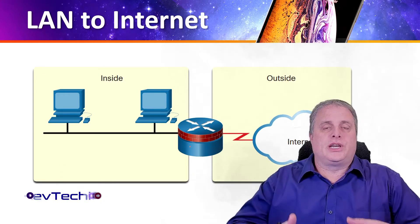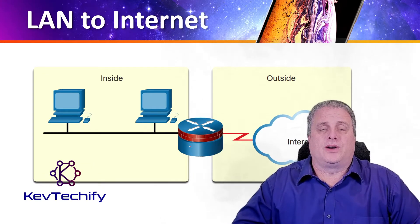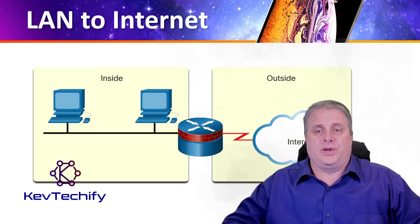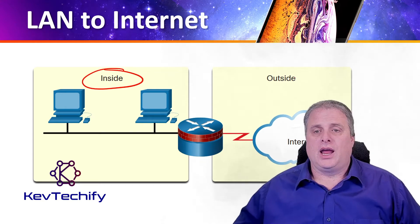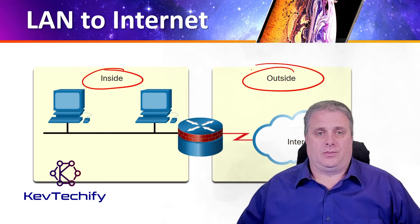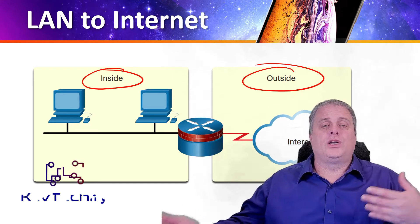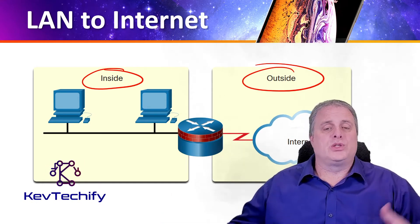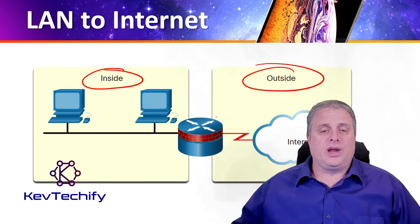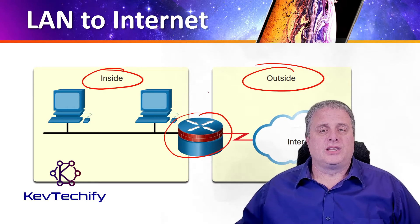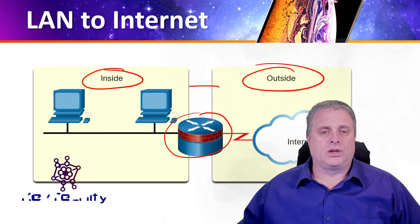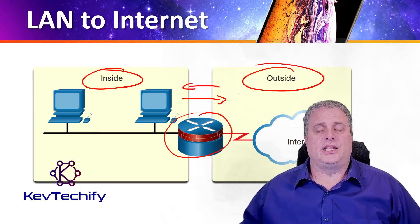Here's a simpler example of setting up zones for a zone-based policy firewall. Here we have two zones: the outside, or the internet, and the inside. What we're going to do is determine what traffic can travel between those zones. We have our router and our firewall in the center, and we're going to set up policies that allow traffic to travel between these zones — one set going from the outside to the inside, and another set going from the inside to the outside.